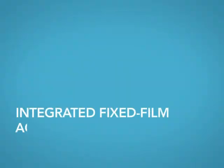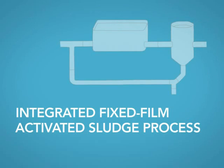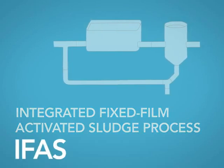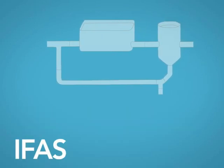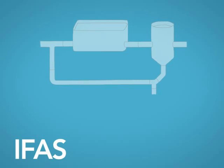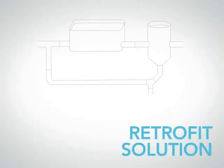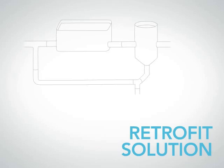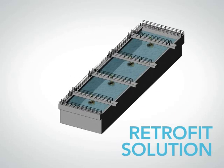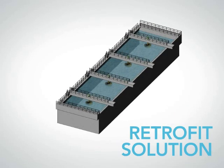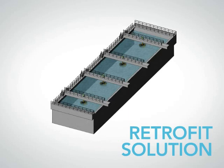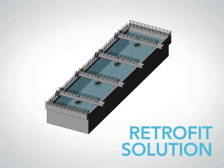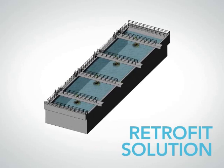The Integrated Fixed Film Activated Sludge Process, or IFAS, can be designed for new treatment plant construction, but is typically installed as a retrofit solution for municipal wastewater plants with conventional activated sludge systems at or beyond treatment capacity. It can also convert a non-nitrifying plant to full nitrification or even total nitrogen removal. Let's take a look at an IFAS retrofit.